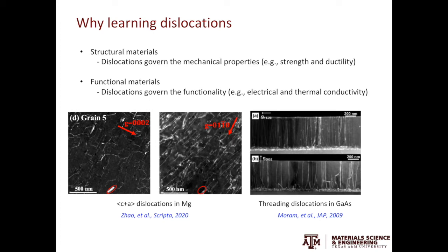Similarly, for functional materials, dislocations can govern functionalities such as electron and phonon transport behavior. In the example on the right, you can see the dislocations going through the thickness of the gallium arsenide thin films. In both examples, dislocation lines appear as bright lines in those images.